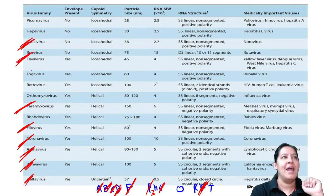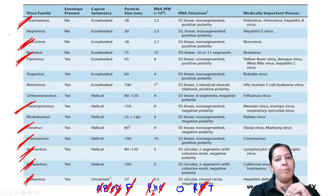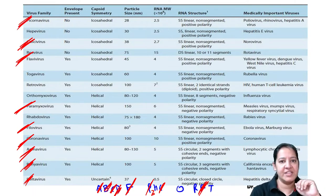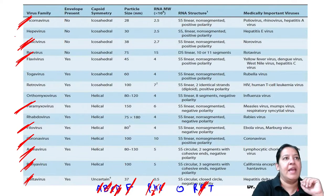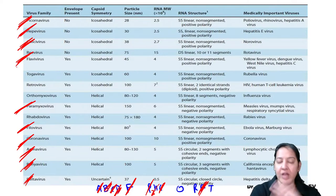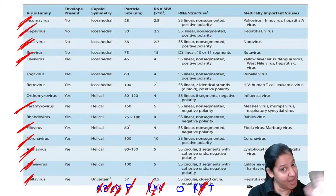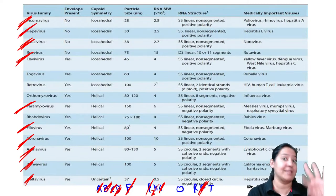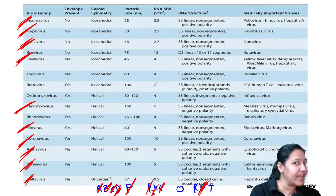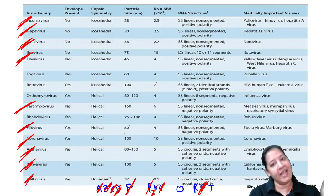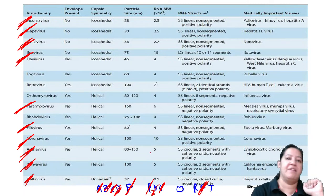Among RNA viruses: Paramyxo is the largest and Picorna is the smallest. H is Hepe virus - not Herpes, not Hepadena. Herpes and Hepadena are DNA viruses, while Hepe is the RNA virus. O is Orthomyxo. There are two R's: Reo and Rhabdo. T is Toga.